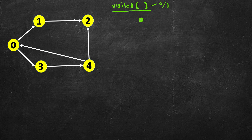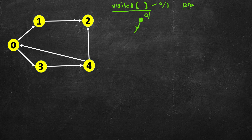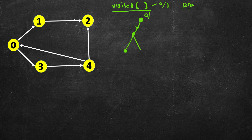When we start DFS from some node, there are a few nodes reachable from it. This concept is similar to pre and post times for vertices: when we reach a vertex we assign it an arrival or discovery time (pre number), and when we finish DFS from it we assign a finish time (post number).